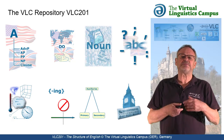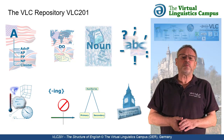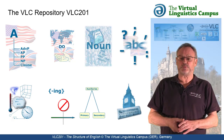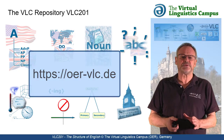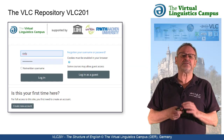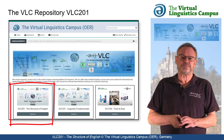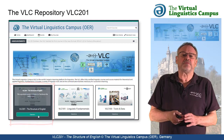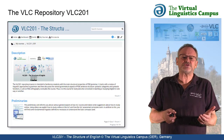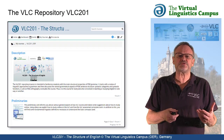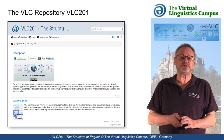Let us see how you can use VLC 201. If you have an account on the Open Educational Resources VLC website, which is of course free, accessing the repository is simple. Just log in with your personal data and you will find the repository on your personalized dashboard or in your course overview. A click on the tile of VLC 201 leads you to the repository start site, where you have access to all modules.